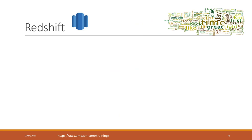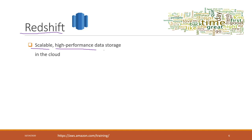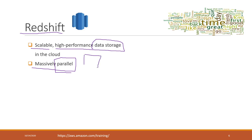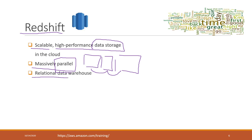Taking Redshift as an example — Redshift is a solution provided by Amazon. It is highly scalable and a high-performance data storage solution in the cloud. It has high performance because it enables massive parallel processing. You don't have only one instance performing queries — you have multiple instances running queries in parallel. Redshift is also relational-based, so all data is stored within tables and you can join tables together using foreign keys and primary keys.